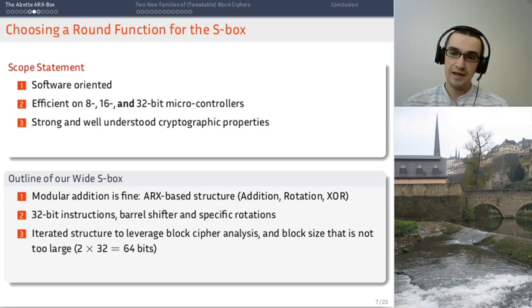We also want then to minimize its width. Because if the width is not too large then we can make some extensive experiments to ensure that our analysis is good. So we are going to stick to two 32-bit words. So we need 32-bit words to be efficient on all microcontrollers. And only two of them to ease our analysis.